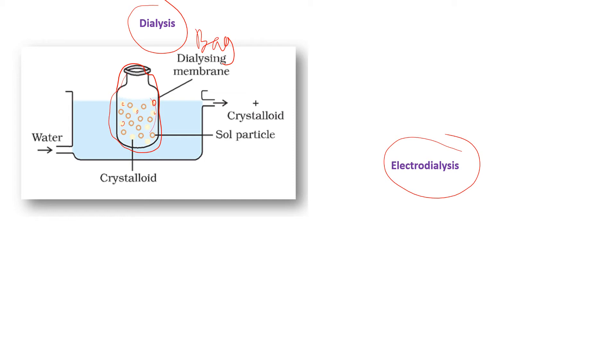And then the bag is suspended in a vessel or a container, and the container flows continuously with pure water. There should be pure water, no ions present in the water. So the water will flow throughout the system.